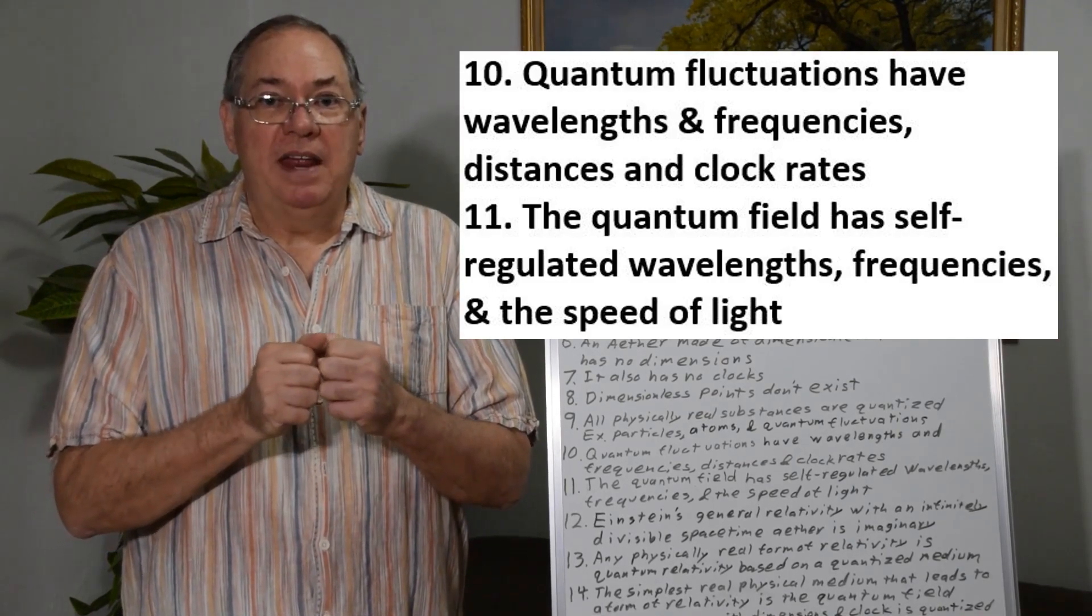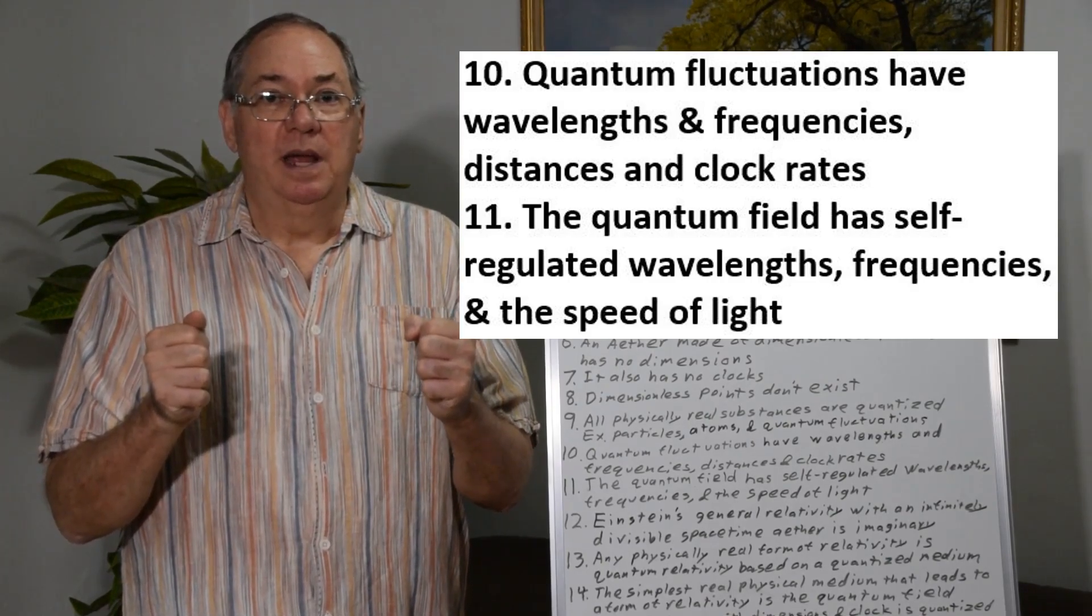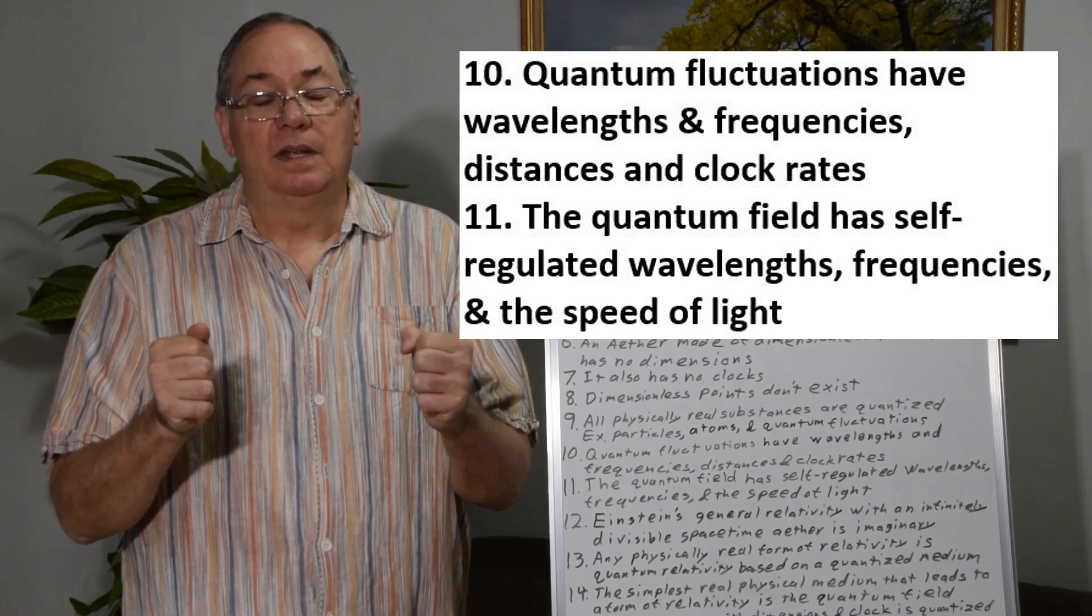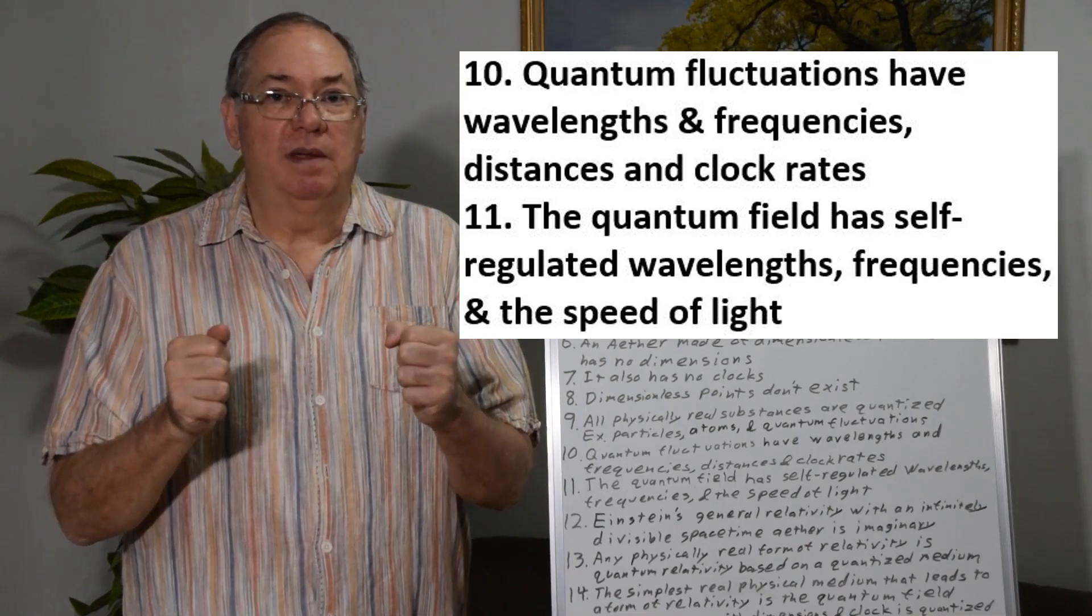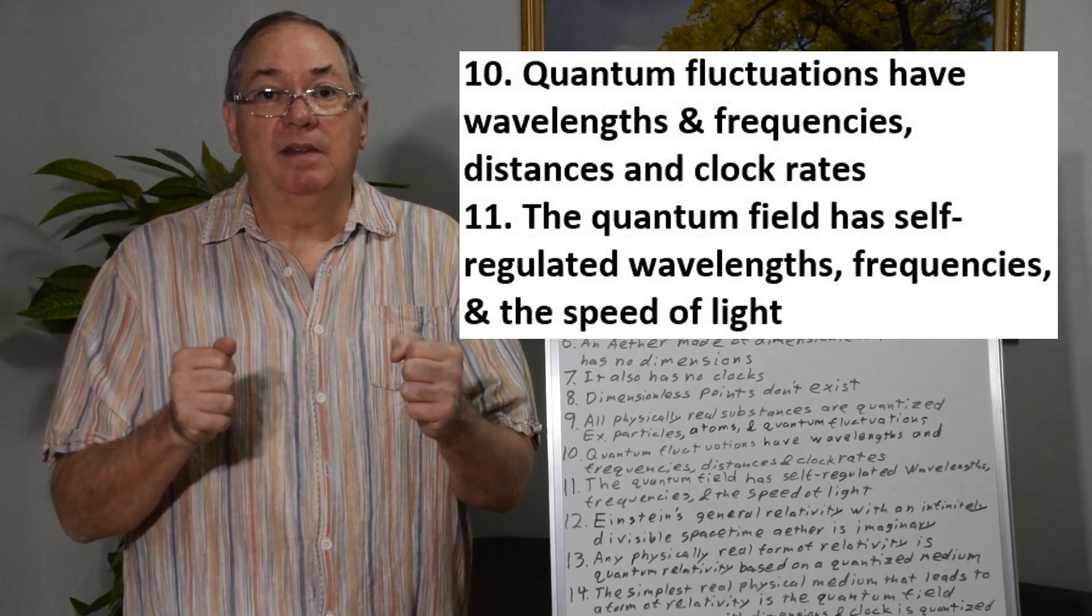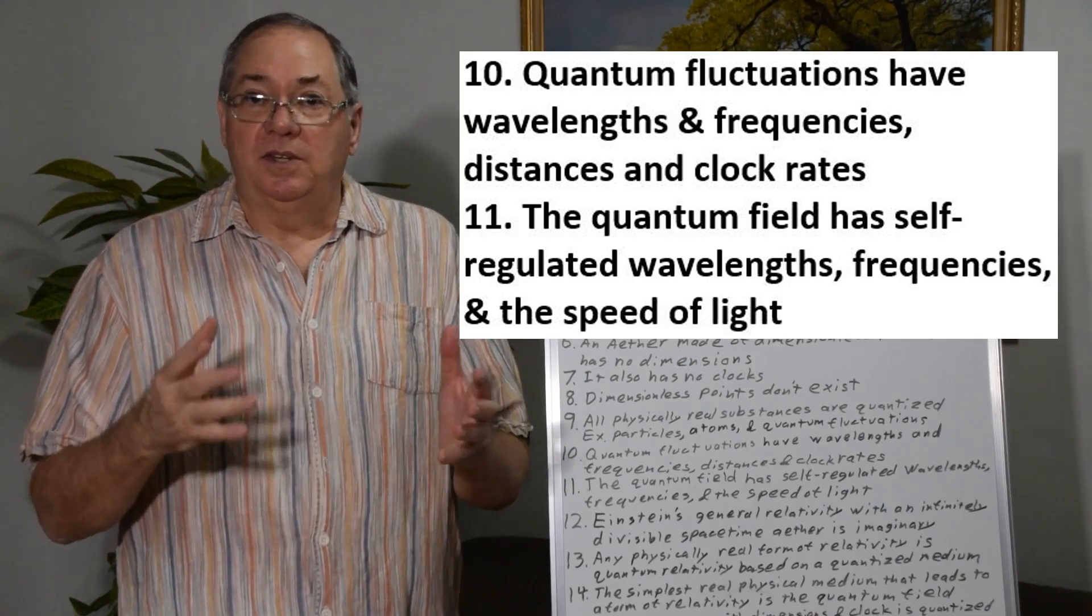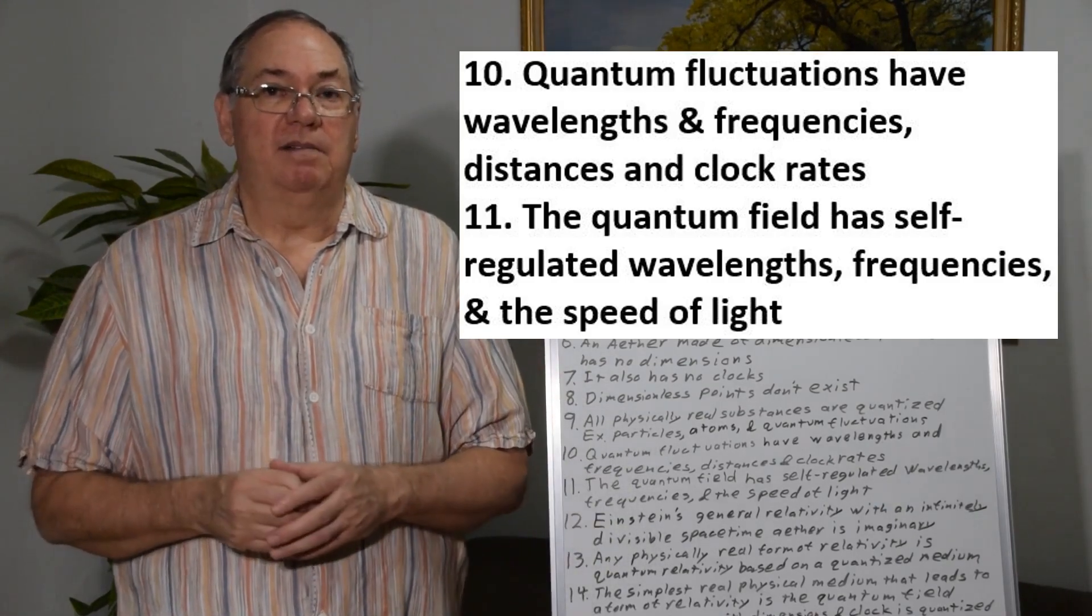So for a given amount of energy in a quantum fluctuation their wavelength is restricted by the torque of the quantum field. It's called a van der Waals torque. So this torque limits the wavelength. It also limits the frequency. And it determines the speed of light which is wavelength times frequency. And it also determines the permittivity and permeability which give you the speed of light.